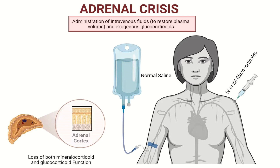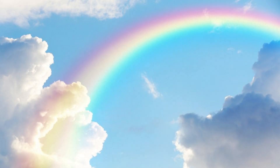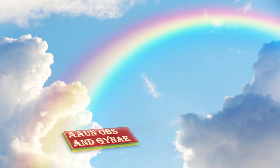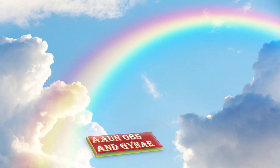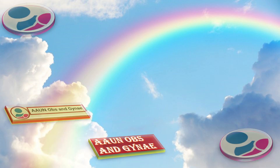Normal saline is given IV or IM, and glucocorticoids are administered, because in adrenal crisis there is loss of both mineralocorticoid and glucocorticoid function.